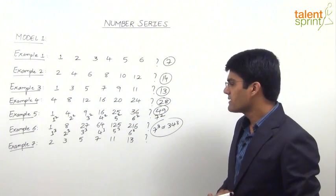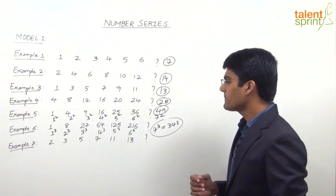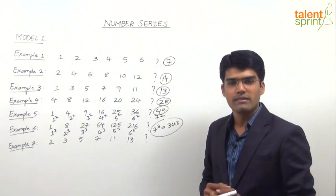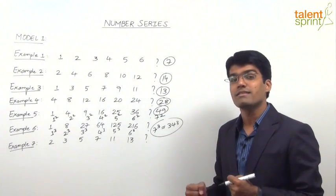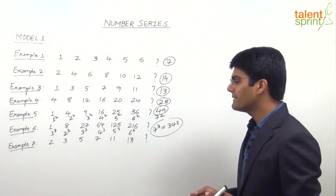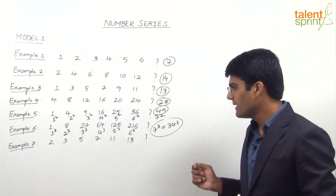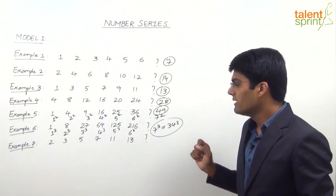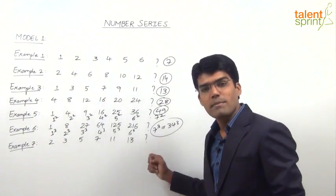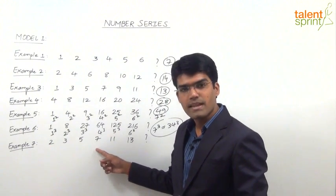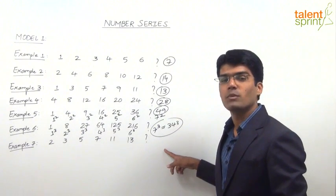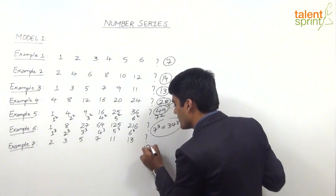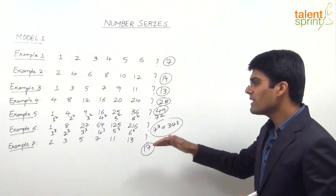The last example in model 1 is 2, 3, 5, 7, 11, 13, and question mark. Try to understand the rhythm and logic behind this series. These are all consecutive prime numbers: 2 is the first prime, then 3, 5, 7, 11, 13, and the next prime number after 13 is 17. So the question mark has to be replaced with 17 — it is simply a series of prime numbers.